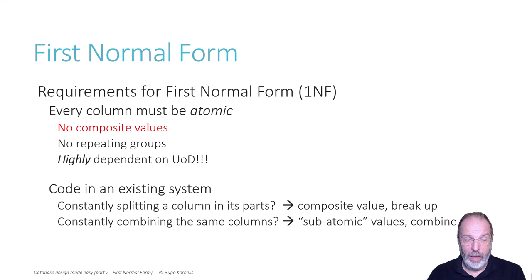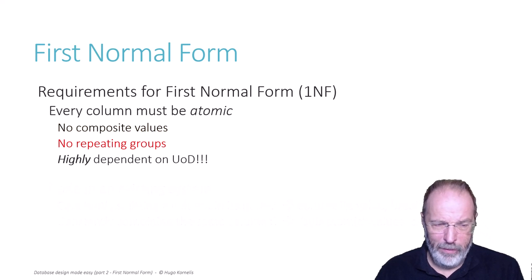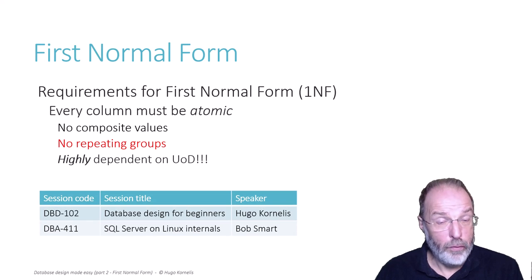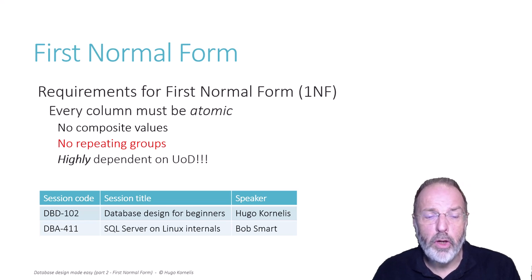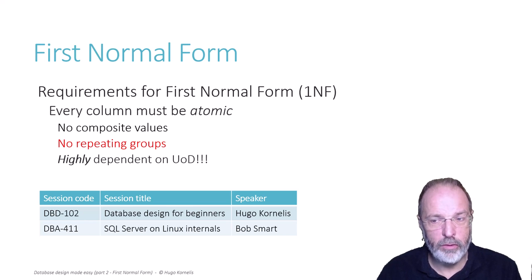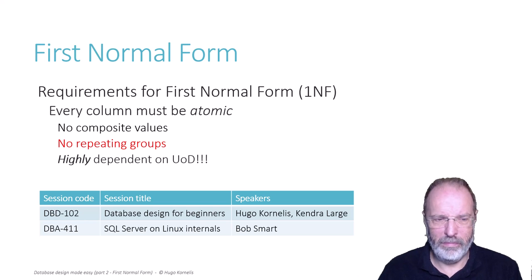Anyway, enough about composite values — let's talk about repeating groups. Let's return to our example with the schedule for the conference. We have those two sessions — and there are of course more, those are just two examples. But what if I am not the only speaker on Database Design for Beginners? What if I want to present that session together with my good friend? We can of course use a comma-separated list of speakers in the Speakers column, but that would be a repeating group.